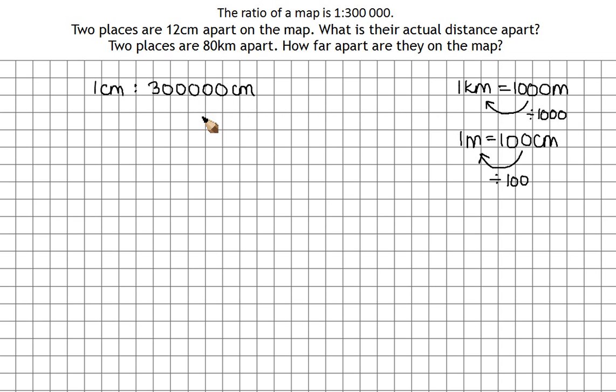So, 300,000 centimeters will be, well, if we're trying to get from centimeters to meters, we divide by 100. So we can effectively just knock two zeros off the end. 3,000 meters. That's already starting to sound much more sensible.